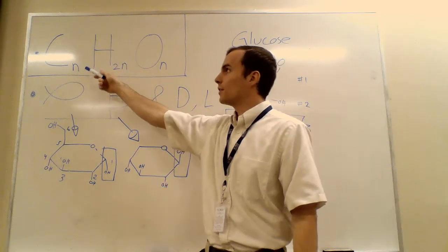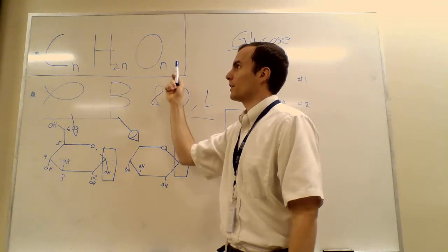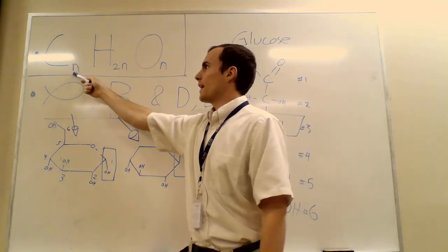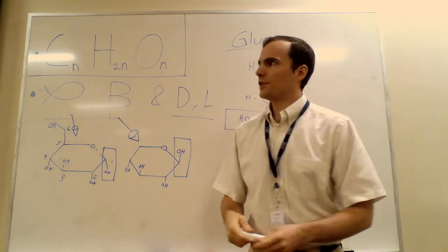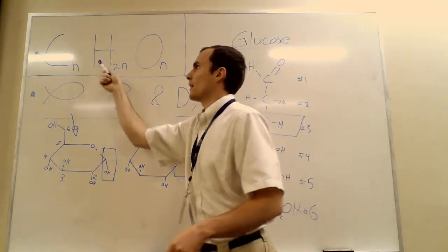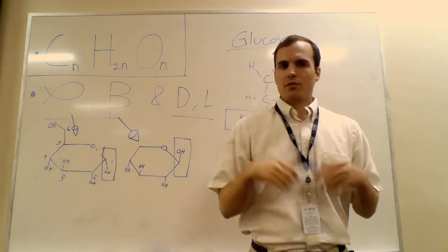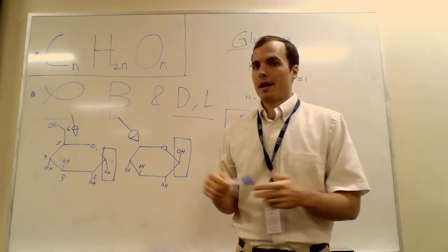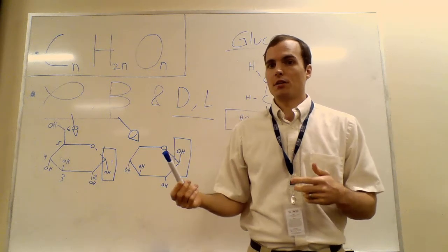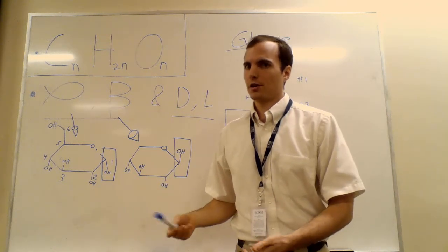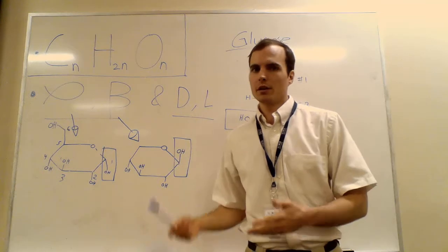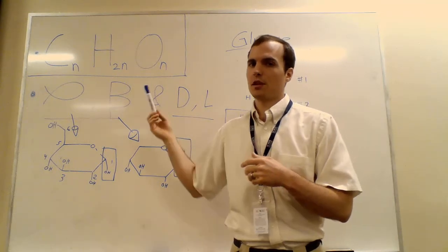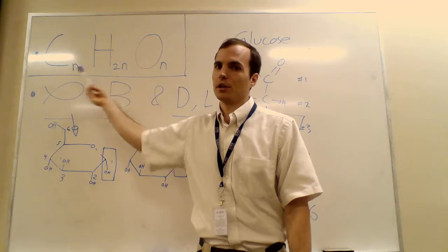So up here we have a sugar's empirical formula. You'll notice that the letter N is in the subscript for each of these molecules: carbon, hydrogen, oxygen. N can be filled in with any number and it would be the proper ratios for a sugar. That's why it's called an empirical formula. Instead of just putting numbers down there, we're able to say all sugars follow this formula.